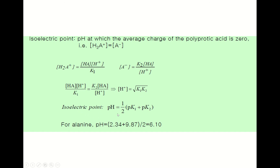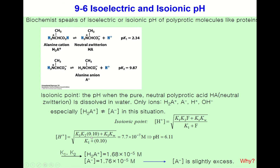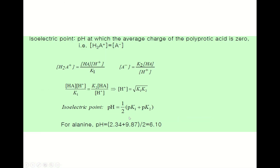Since those concentrations are equal, we can solve and find that the proton concentration equals the square root of K1·K2. So the isoelectric point is simply one-half the sum of pK1 plus pK2. Isoelectric and isoionic pHs are very close — in many cases the same within experimental error — but the concepts are different.